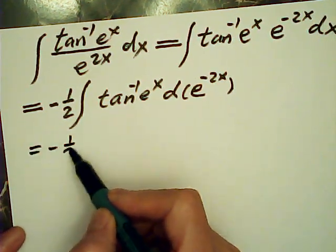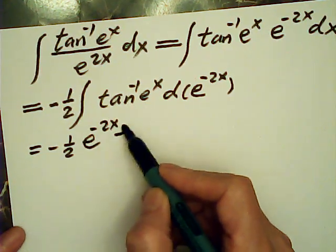So this is equal to negative half e^(-2x) times tan(e^x). That's uv, right? Minus vdu. Minus become plus. Minus equals vdu.